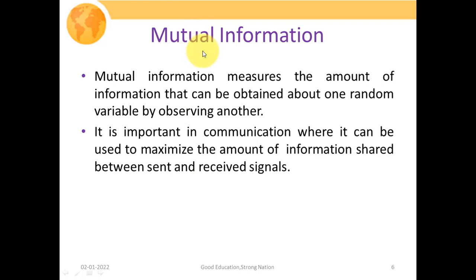Now we're going to discuss the specific term: mutual information. The actual goal of any communication system is to transport information from source to destination. Mutual information basically measures the amount of information that can be obtained about one random variable by observing another. Here we represent information sources with random variables, so X represents the information source transmitting information through the channel to the destination or receiver, represented as random variable Y.